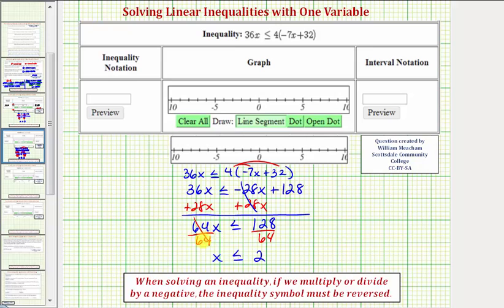Notice how here we divided by a positive 64, and therefore we did not reverse the inequality symbol. It's only if we multiply or divide by a negative that we reverse the inequality symbol.